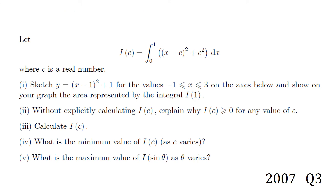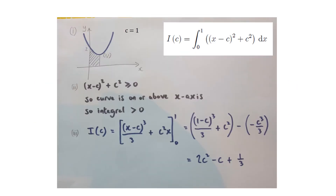This is the first longer question, question 3 from 2007. Part 1 is a sketch, part 2 an explanation, and part 3 a calculation. We're asked to sketch y = (x−1)² + 1. It's clearly a happy quadratic in completed square form, so the vertex is at (1, 1). Substituting x = 0 gives y = 2, so it crosses the y-axis at 2. I've drawn that on the left and shaded the area beneath the curve between 0 and 1 to show i(1).